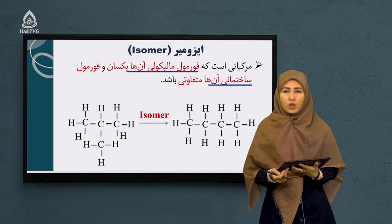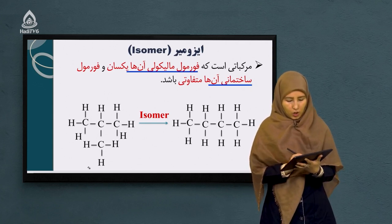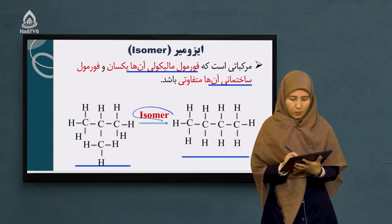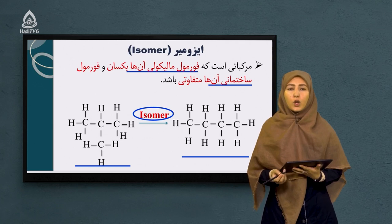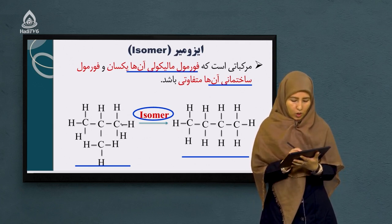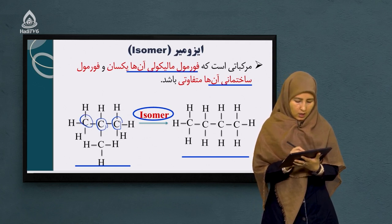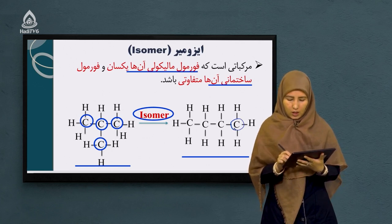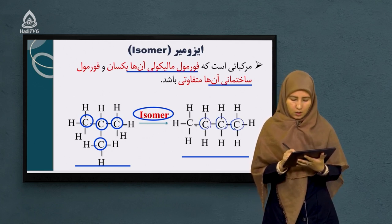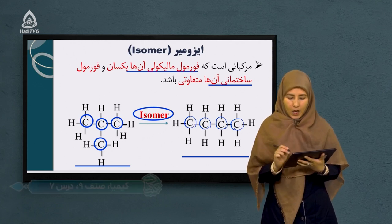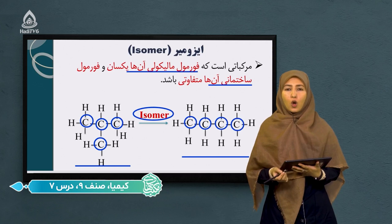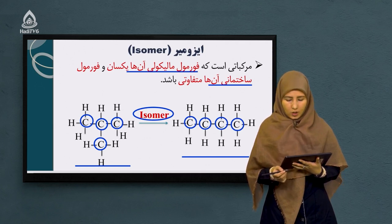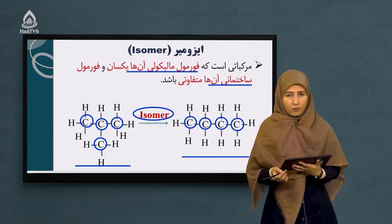اما فرمول ساختمانی آن‌ها متفاوت می‌باشد؛ به این معنی که نحوه اتصال اتم‌ها با همدیگر فرق دارن. به عنوان مثال به دو ساختار زیر دقت کنید. این دو ساختاری که در این قسمت مشاهده می‌کنید ایزومیر یک‌دیگر به حساب می‌آیند. چرا؟ چون دارای فرمول مالیکولی یکسان است. هر دو دارای چهار اتم کاربون می‌باشد.